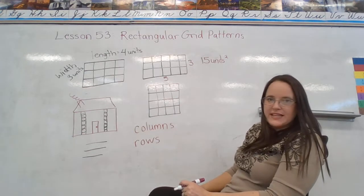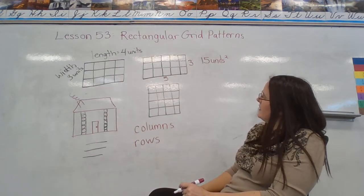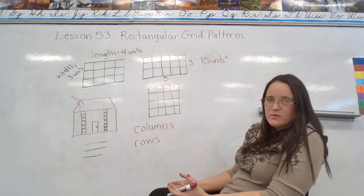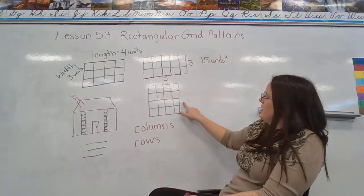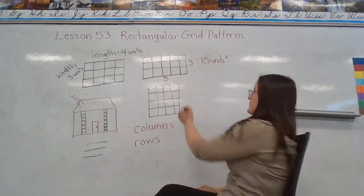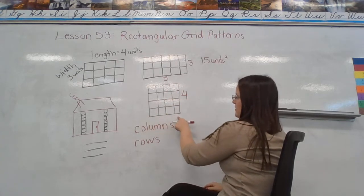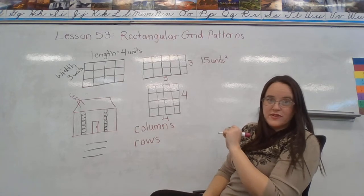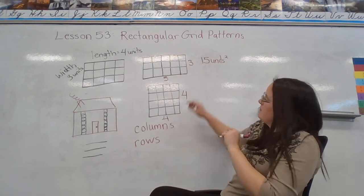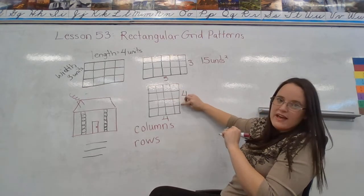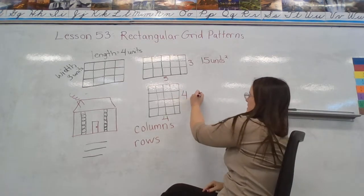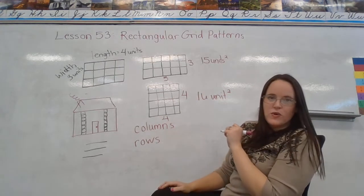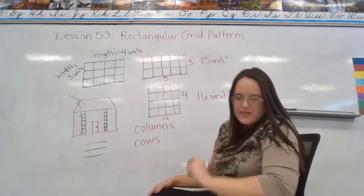What about this one? What's the length and what's the width? Well Mrs. Duarte, they're the same. So I can't really say one's length and one's width, but what's the side length here? One, two, three, four. And one, two, three, four. So how many small squares are in this shape? I'm going to count by fours. Four, eight, twelve, sixteen. Here I have sixteen, sixteen square units.